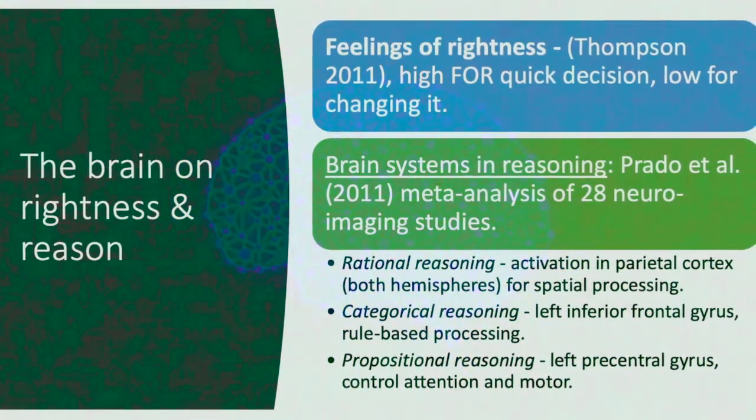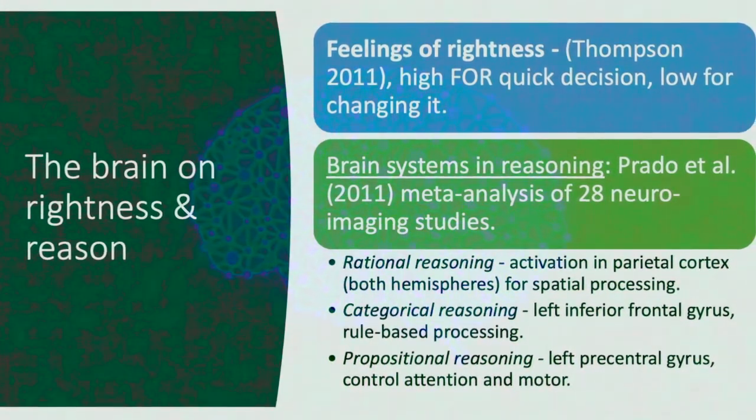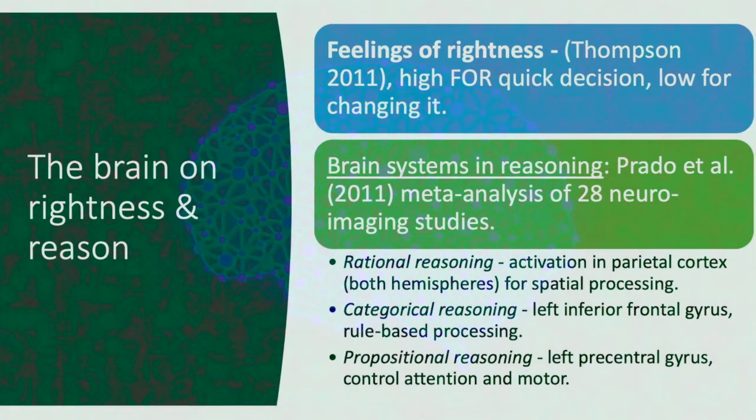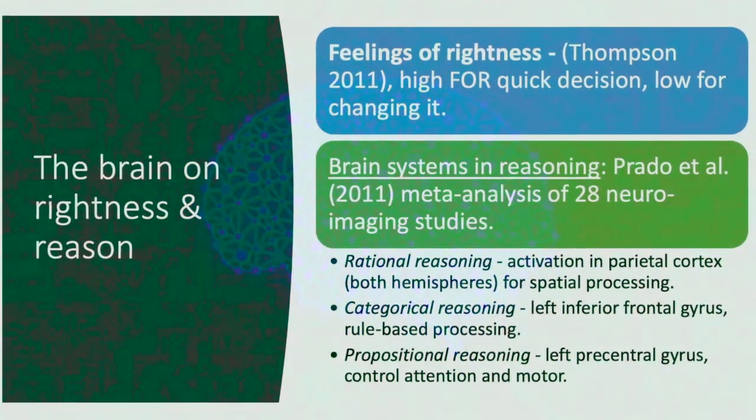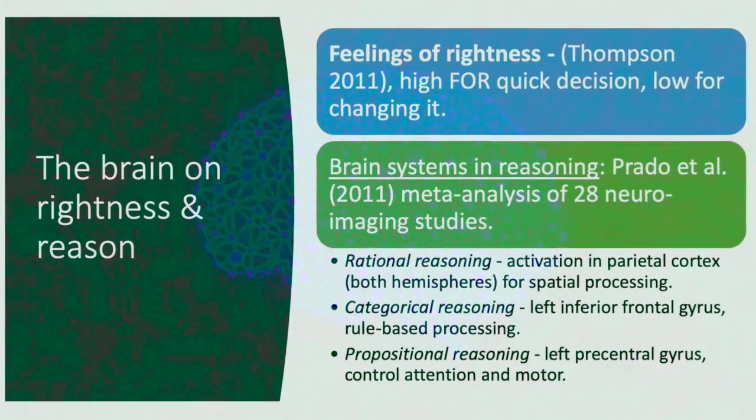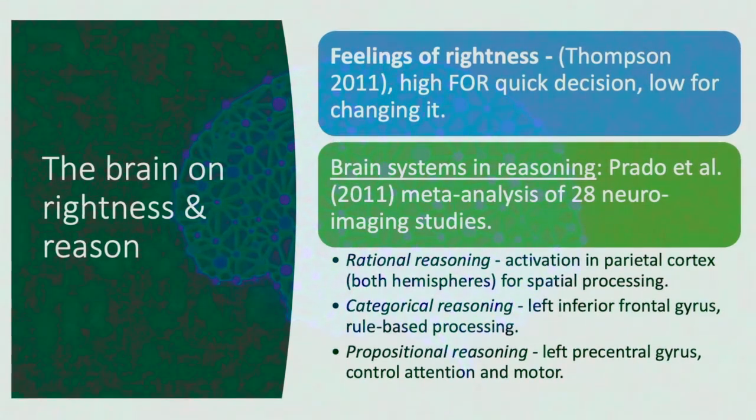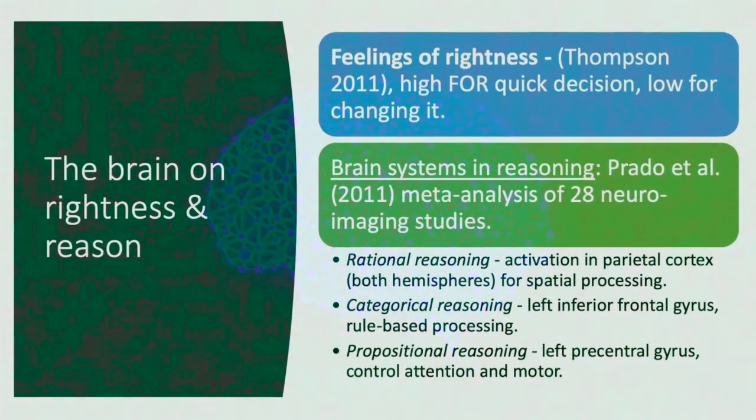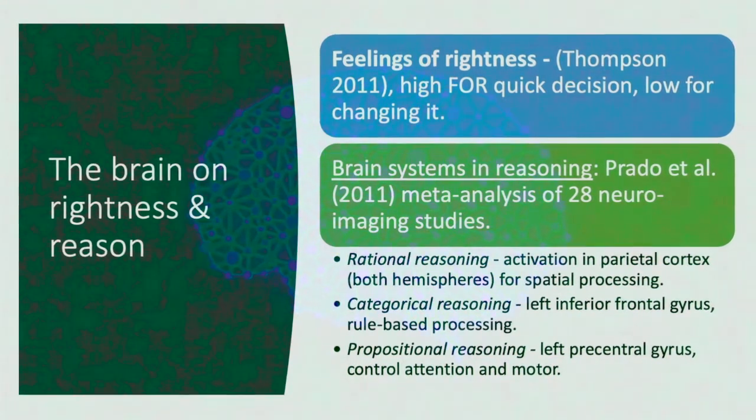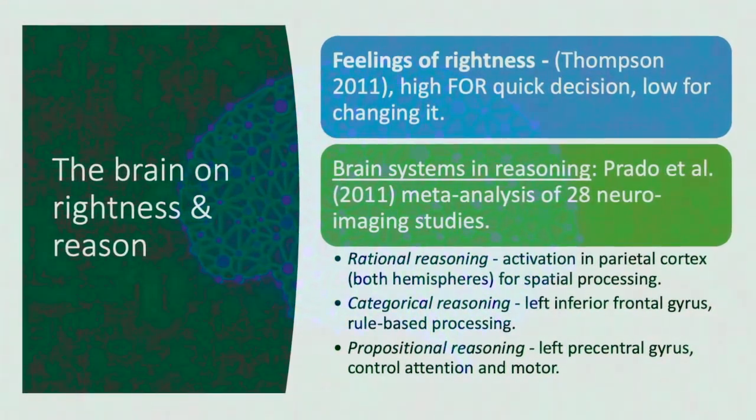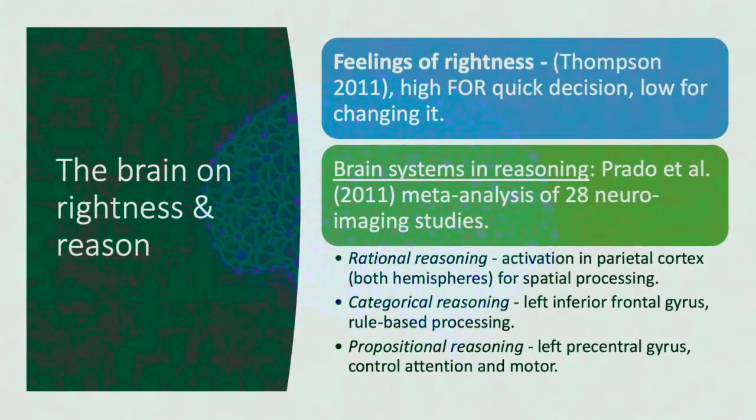The brain system in reasoning: Prado et al. 2011 conducted a meta-analysis of 28 neuroimaging studies and found that rational reasoning activated the parietal cortex of both hemispheres, which was in charge of spatial processing. Categorical reasoning activated the left inferior frontal gyrus, which affected rules-based processing. Propositional reasoning was found to activate the left pre-central gyrus, which controlled for attention and motor activities.